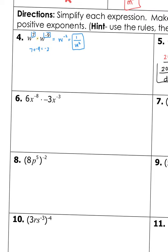Go ahead and try number 6 on your own. You're doing 6x to the negative eighth times negative 3x to the negative third power, so you are multiplying. Multiply your coefficients and then add your exponents. If you have anything that's negative, flip it down to the bottom.